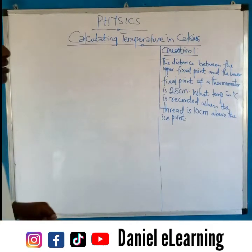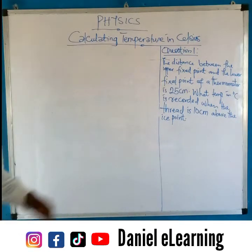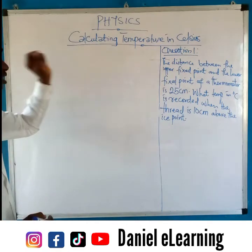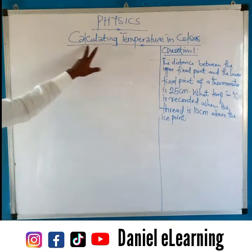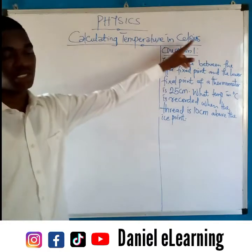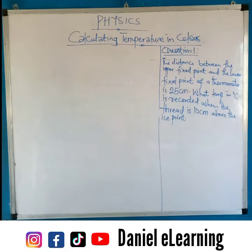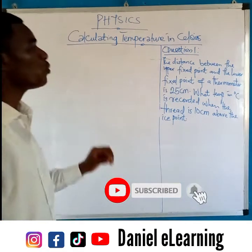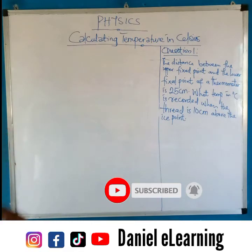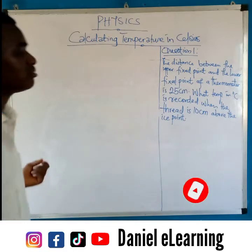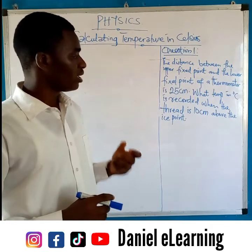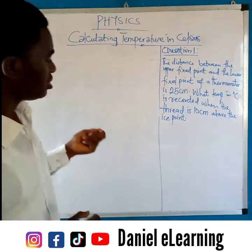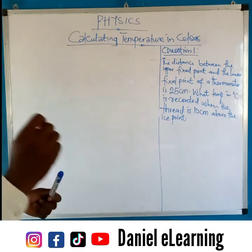Welcome once again to Daniel Eben. My name is Daniel Eben and in today's class we want to look at phases, specifically calculating temperature in Celsius. We have a question: Question number 6. The distance between the upper fixed point and the lower fixed point of a thermometer is 25CM. What temperature in degrees Celsius is recorded when the thread is 10CM above the ice point?